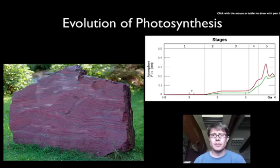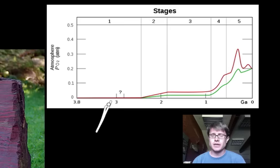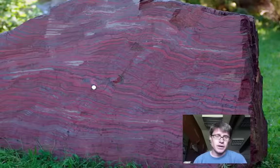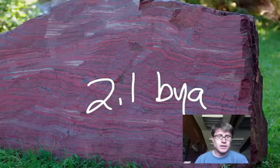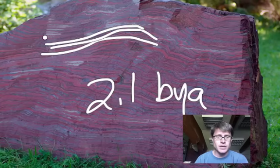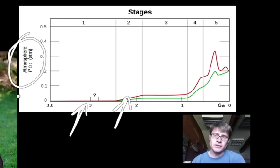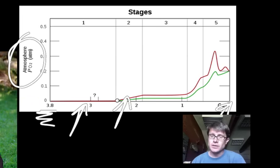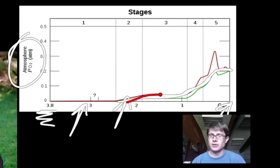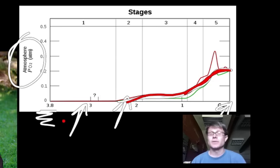The evolution of photosynthesis on our planet happened really early. We think those first life forms were using some form of photosynthesis, maybe chemosynthesis to begin with. About 2 billion years ago, looking at rock layers — this rock is about 2.1 billion years old — we start to see red bands showing up, indicating oxygen being produced in appreciable amounts. This graph shows atmospheric oxygen through time over the last 3.8 billion years of life on our planet. Oxygen levels have increased, and that oxygen came from photosynthesis.